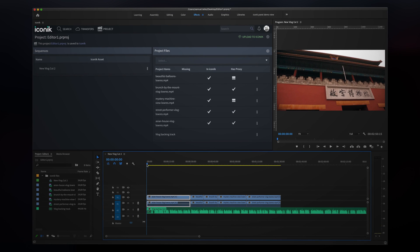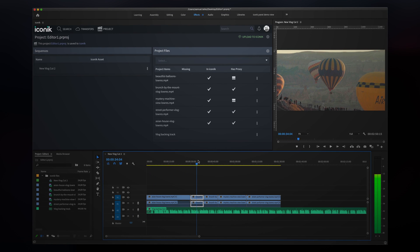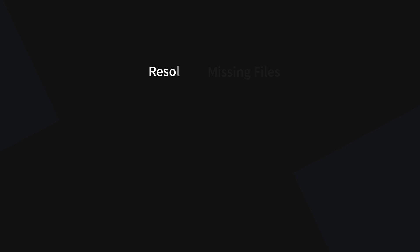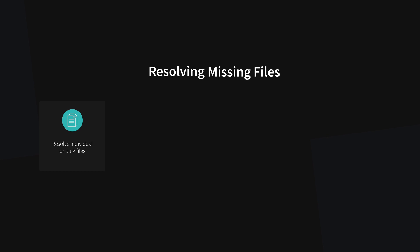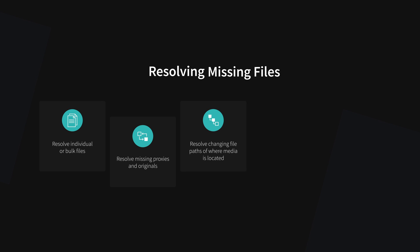The Iconic panel can resolve missing files for many different instances. For example, you could resolve missing files individually or in bulk, resolve both proxies and originals that have been added from the Iconic panel, and resolve the changing file paths of where media is located — like when switching from a Windows to a Mac OS environment. You can also resolve missing files by changing the file path to files on another on-premise storage managed by an Iconic storage gateway.